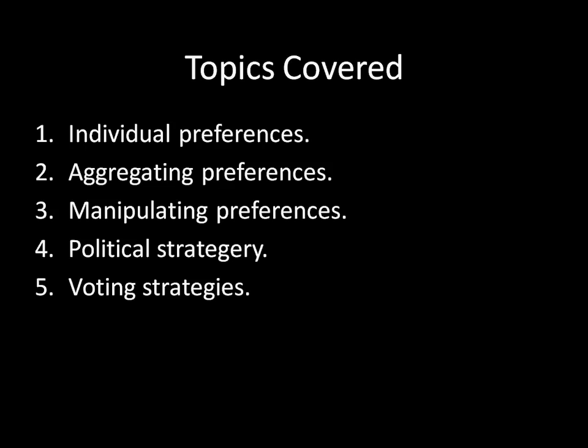In the last unit, we're going to do something very different. Throughout the previous units, we assume individuals don't have incentives to work together or common preferences. The last unit is going to be on something called the Condorcet Jury Theory. We'll look at situations where individuals have common interests — for example, a board of trustees electing a CEO, where everyone wants to maximize the company's revenue but may have different information about which candidate is better. The Condorcet Jury Theorem looks at how individuals who actually want to work together can aggregate information in a way that improves everyone's welfare. That's covered in the sixth unit.